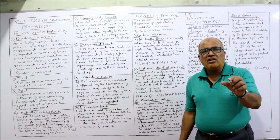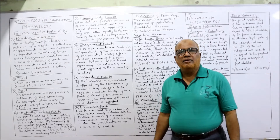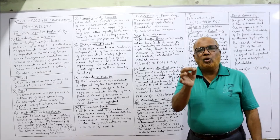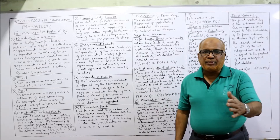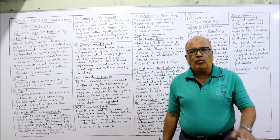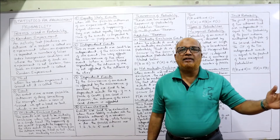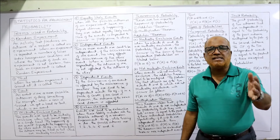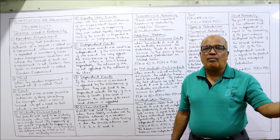Dependent events: if the occurrence of one event affects the occurrence of the second event, then both are called dependent events. For example, if you draw a card from a pack — first time you draw a king, the probability is 4/52. You keep it separate. The second time you draw a king, you will get 3/52, because one king has been removed. So the first and second events are completely dependent events — the second event depends on the outcome of the first.